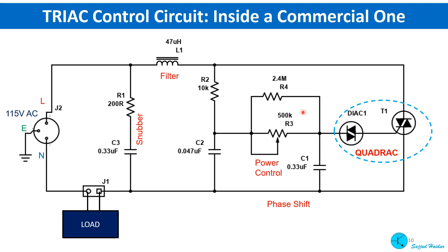Let us look at what is inside a practical commercial circuit. There are some extra components for specific purposes. In some commercial circuits, you will not see a DIAC; instead, you will see a three-terminal device which combines the TRIAC and DIAC, called a QUADRAC. An inductor is used to filter out RF noise, and an RC snubber is very important for motor control. Motors are inductive loads, and TRIACs are always making and breaking the circuit. During breaking, a very high voltage can develop across the motor, and these high voltage spikes are absorbed by the snubber.